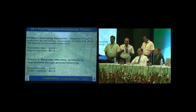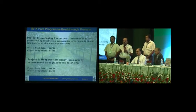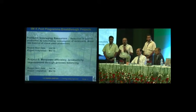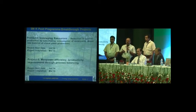The first project is reduction in cost of production by substituting the consumption of vermiculite, which is a major raw material used in clonal plant production. The second project, related to labor, is manpower efficiency or productivity improvement through process balancing.